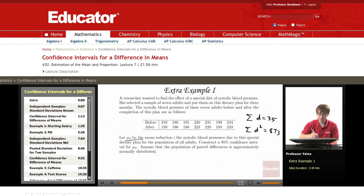Let mu d be the mean reduction in the systolic blood pressure due to this special dietary plan for the population of all adults. We want to construct a 95% confidence interval for mu d. Assume the population paired differences is approximately normally distributed. So alpha equals 0.05 here, so that means alpha over 2 is 0.025.